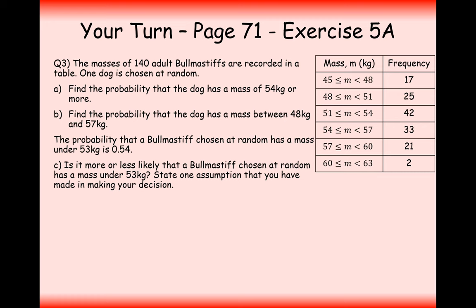Alright then, hopefully that was okay for you. The masses of 140 bull mastiffs are recorded on a table. One dog is chosen at random. Find the probability that the mass of the dog is 54 kilograms or more. So this group of dogs here are going to be 54 kilograms or more.